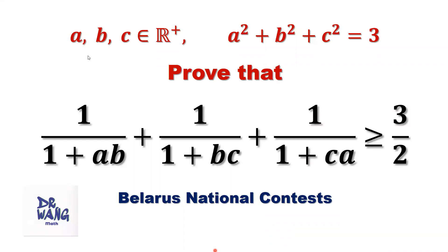If A, B, C are positive real numbers and A squared plus B squared plus C squared equals 3, prove that 1 over (1 plus AB) plus 1 over (1 plus BC) plus 1 over (1 plus CA) is bigger than or equal to 3 halves.